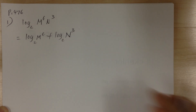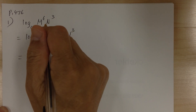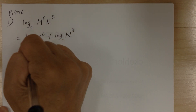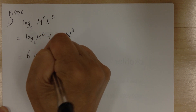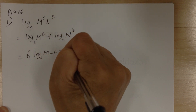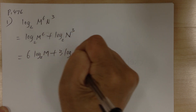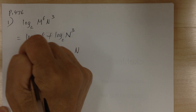Then after you apply the third log rule, the exponents come to the front. And that's it.